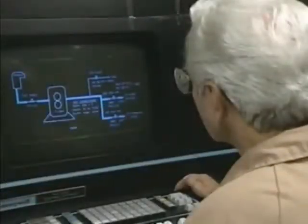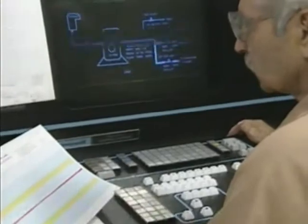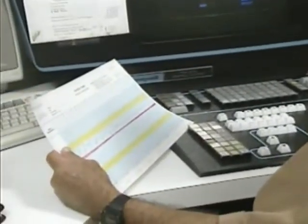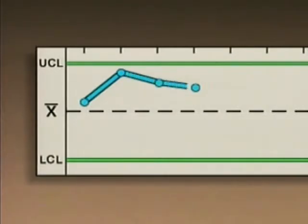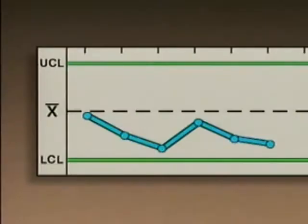The way that a pattern on a control chart is interpreted often depends on the type of chart. On X-bar charts, for example, plotted values that fall near the upper control limit may indicate that the average value of the data collected from the process has increased. Plotted values that fall near the lower control limit on an X-bar chart may indicate that the average value of the data has decreased.